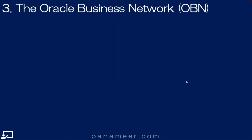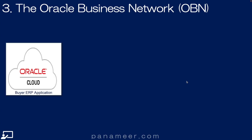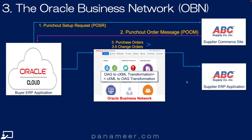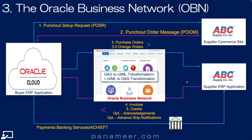Slide three: the Oracle Business Network. This slide introduces the Oracle Business Network, or what we call OBN. OBN is a separate cloud-based application that facilitates the exchange of transactions between any two ERP applications. Starting with an install of Oracle Cloud, somebody punches out to a remote catalog. The remote commerce site sends back the contents of the shopping experience. We then send the PO back via OBN with the contents of that shopping experience to the supplier. The supplier fills the order and sends an invoice back via OBN, and we pay via EFT.